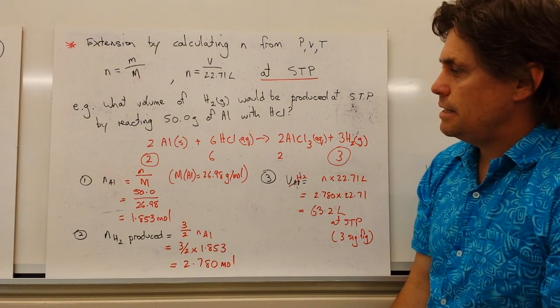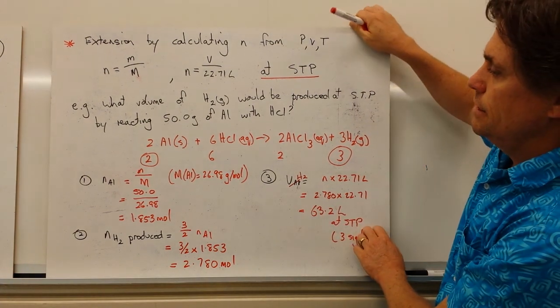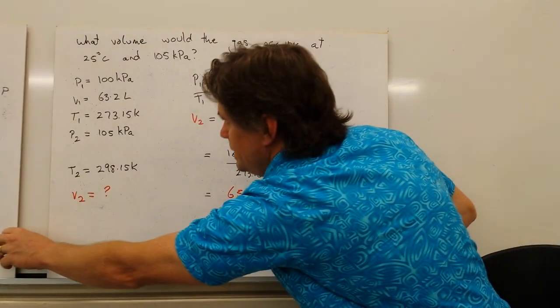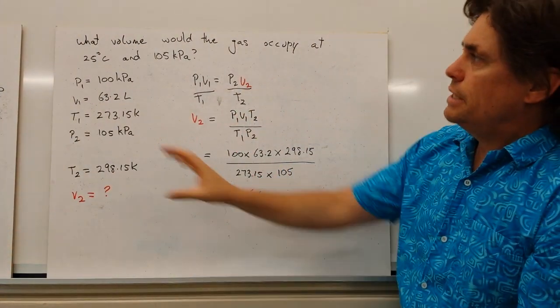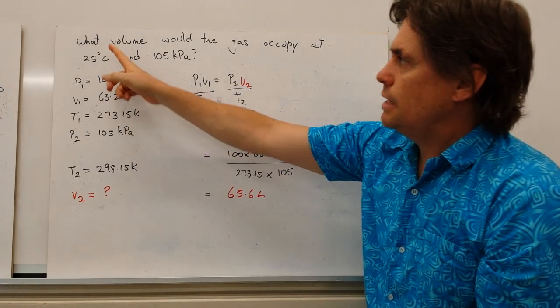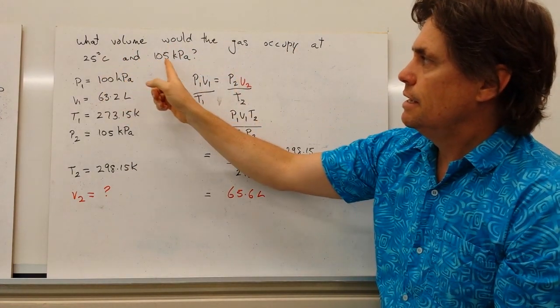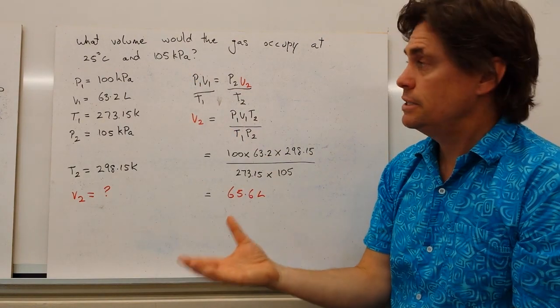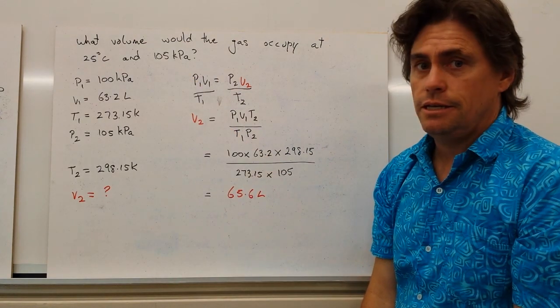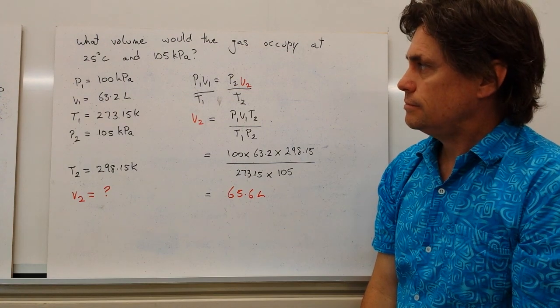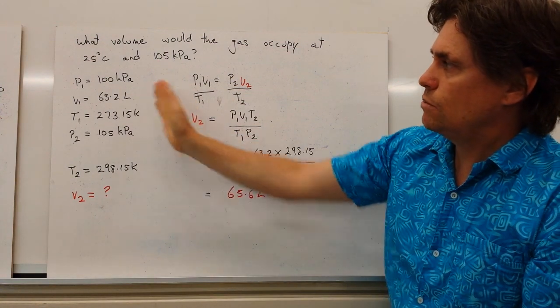Now we can extend this question even further by changing the conditions that this gas is in. So we take our previous example and we ask what volume would the gas occupy at 25 degrees C and 105 kilopascals. So we've changed the temperature, we've changed the pressure.